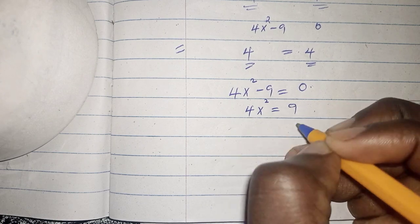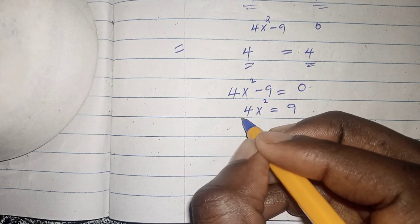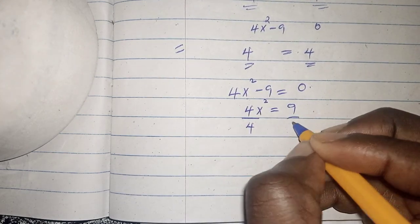4x squared equals 9. So we shall then divide this side by 4, divide this side by 4.